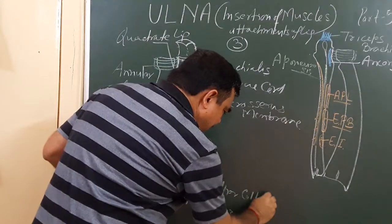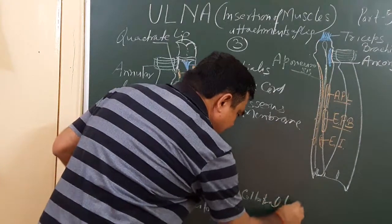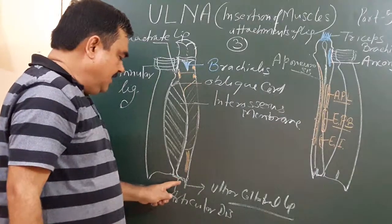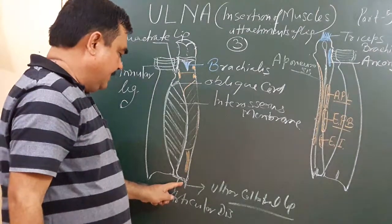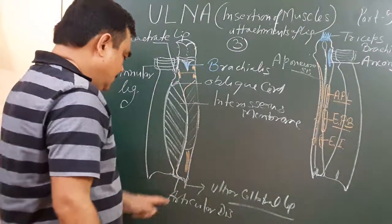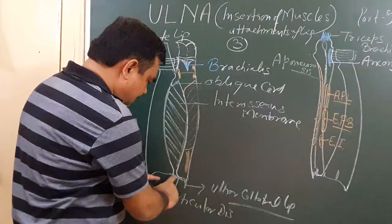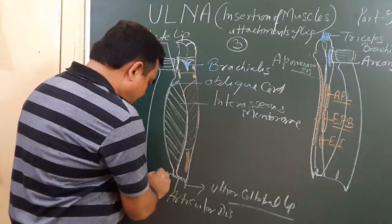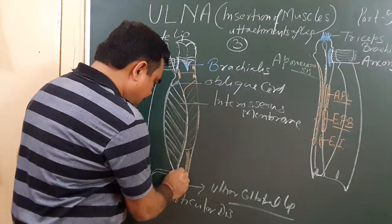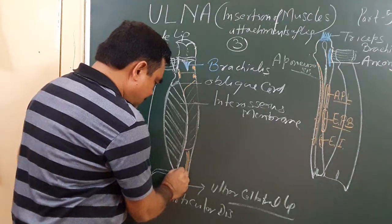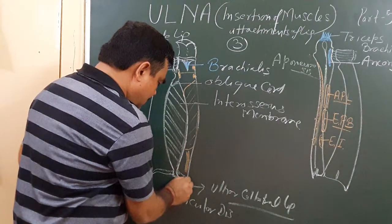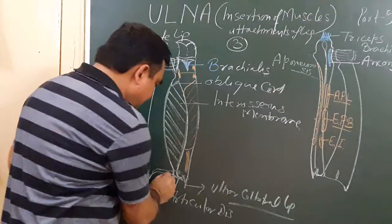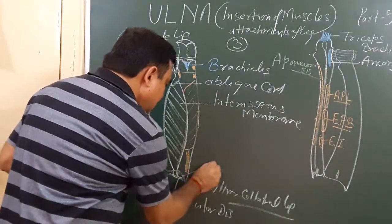This is the ulnar collateral ligament of the inferior radioulnar joint. It is attached here. And another structure here is the capsule of the joint — the margin of attachment of the capsular ligament.